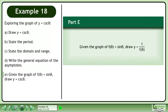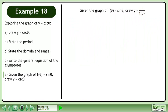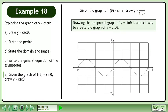Now we'll move on to Part E. Given the graph of f of theta equals sine theta, draw y equals 1 over f of theta. Drawing the reciprocal graph of y equals sine theta is a quick way to create the graph of y equals cosecant theta.